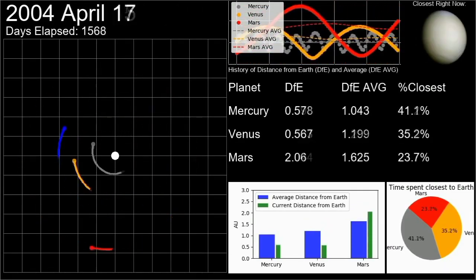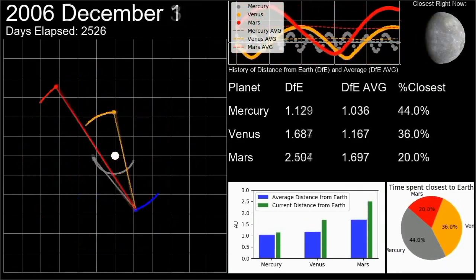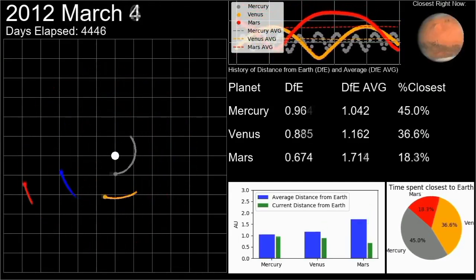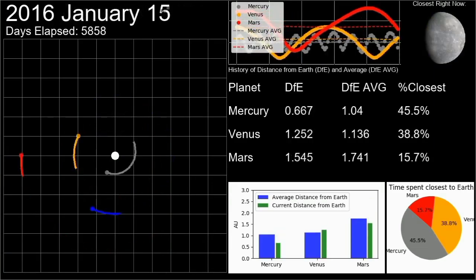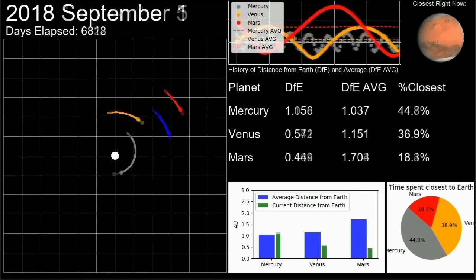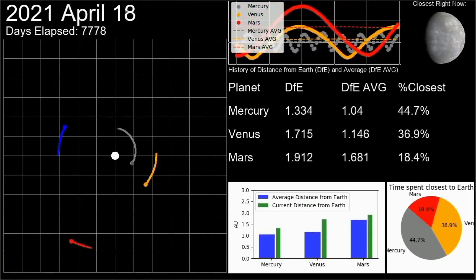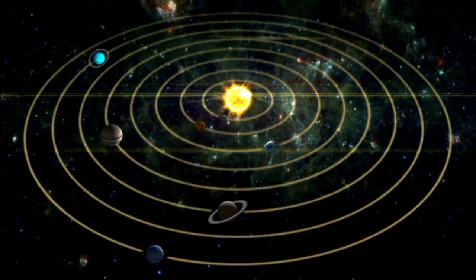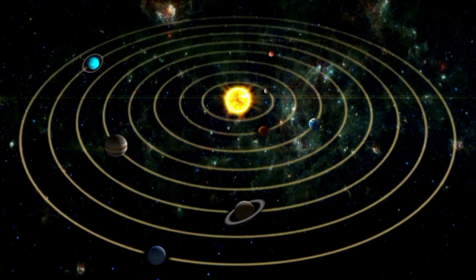The scientists developed a simulation of our solar system featuring all of the planets moving in their orbits. They let the planets orbit for thousands of simulated years, all the while calculating the distance between any two of them. The scientists then averaged those values together to find which planets are the closest to each other over time.